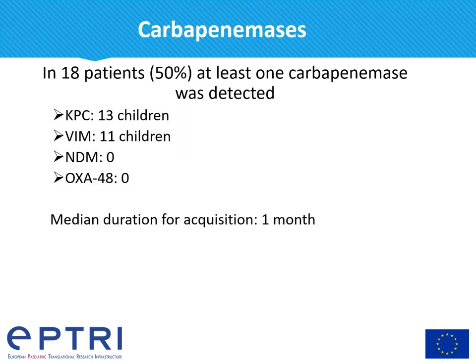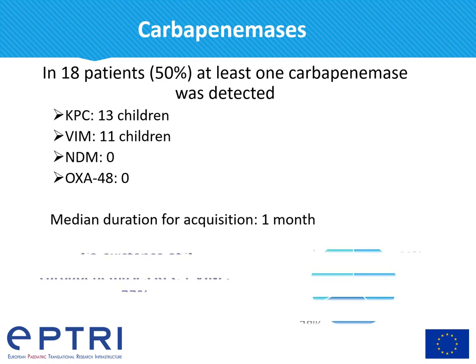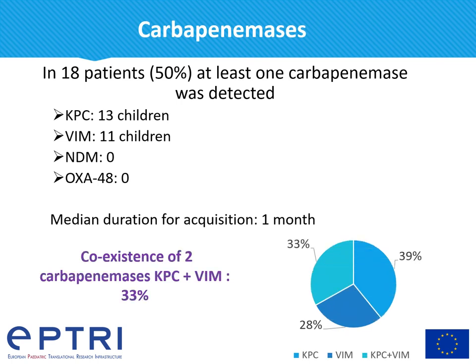In 18 patients, at least one carbapenemase was detected. There were 13 children with KPC and 11 children with VIM. There was no child with NDM or OXA-48. The median duration for acquisition was one month. We also found co-existence of two carbapenemases, KPC and VIM, in one third of patients.